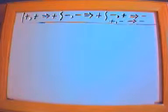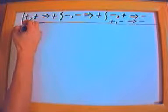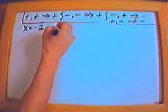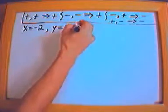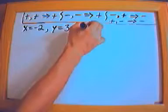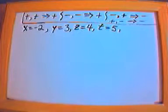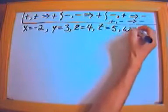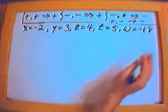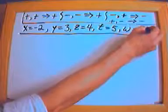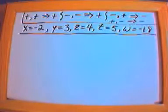Now we're going to plug-and-chug with some division problems to illustrate that they're pretty much the same. Let's say x is equal to negative 2, y is equal to 3, z is equal to 4, t is equal to 5, and w is equal to negative 18.